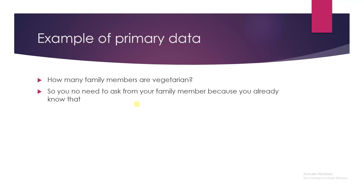Let's take another example. If someone asks you how many family members like cricket, you will say: I know me and my sister like cricket and the rest of the members like badminton or football. This is your family and you have an idea about your family, so this is primary data. You can collect the data from your own information or from your knowledge.